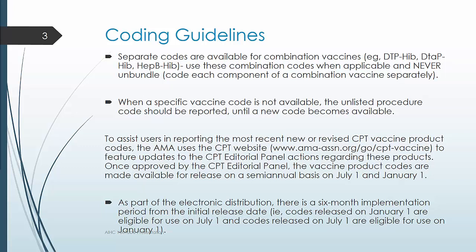When a specific vaccine code is not available, the unlisted procedure code should be reported until a new code becomes available. To assist users in reporting the most recent new or revised CPT vaccine product codes, the American Medical Association uses CPT to feature updates to the CPT editorial panel actions regarding these projects. You can go to ama-assn.org to download that information.